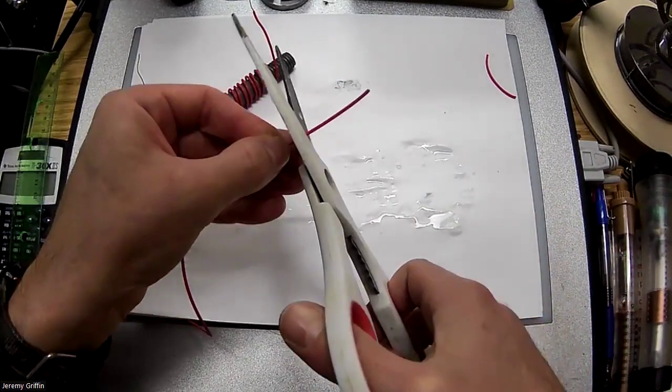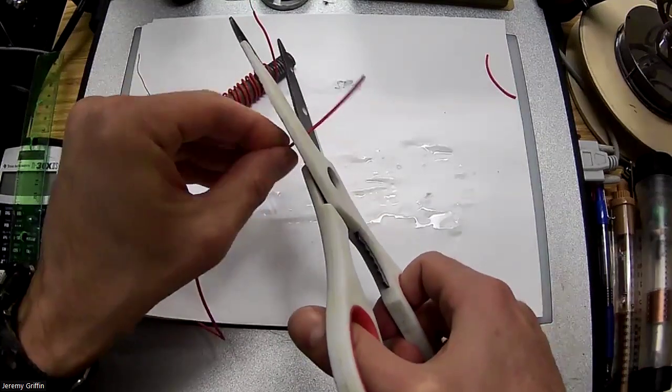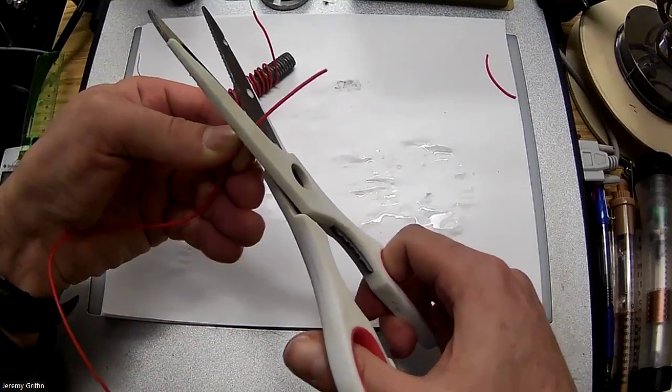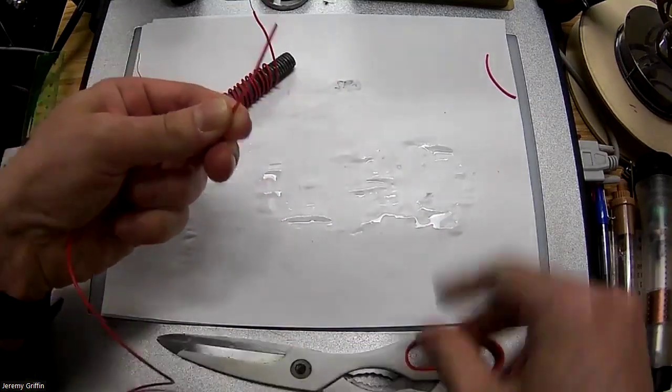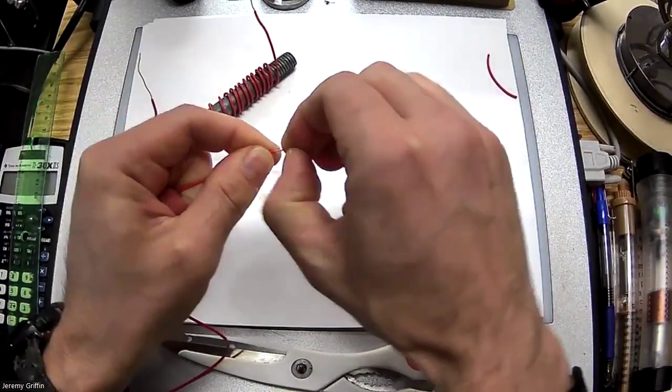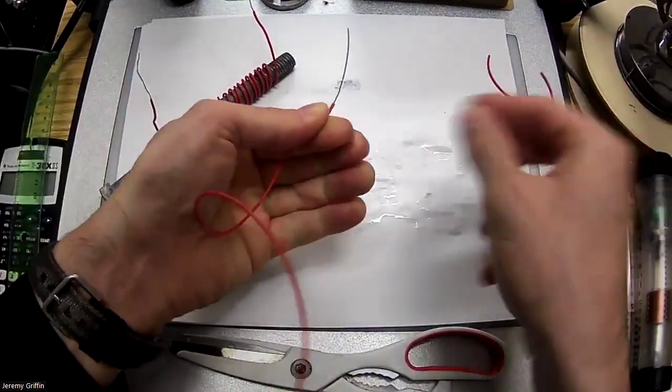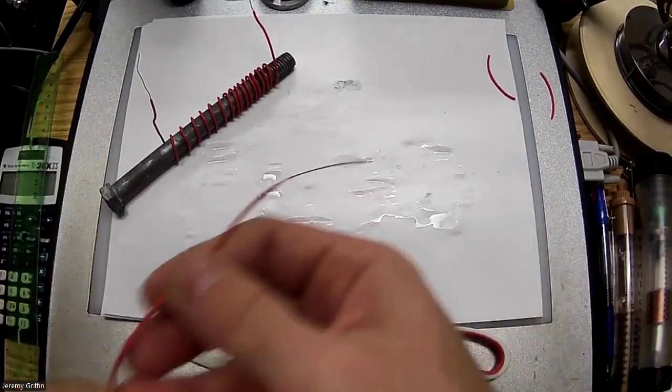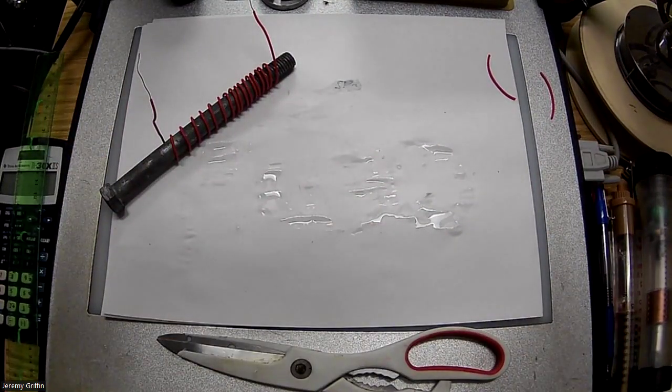Here's the correct way to use the scissors to strip the end. Just go around, make a very careful small incision. Just boom, just small incision like that. And then the insulation will come right off, boom. That's it. Just strip the end like that. Now it's a safe way to do it. And you probably don't even need to do that because I just stripped a bunch this morning and they're all back there.